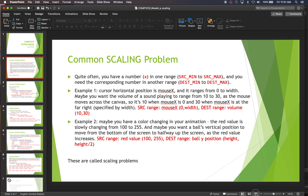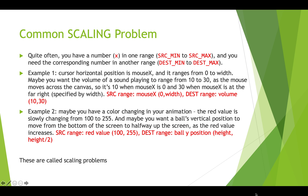The common scaling problem is that often you have a number that's in one range and you need it in another range — we talk about the source range and the destination range. For example, suppose you have the horizontal position of the cursor specified by mouseX, going from zero to width. Maybe you want the volume of a sound to range from 10 to 30 decibels, increasing as the mouse moves across the canvas. So the source range is zero to width, the current setting is mouseX, and the destination range is volume from 10 to 30. We need to figure out how to do that mapping.